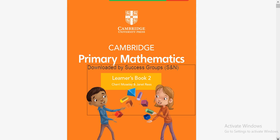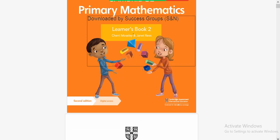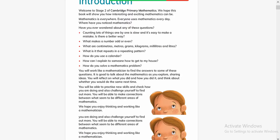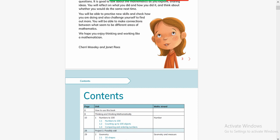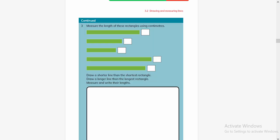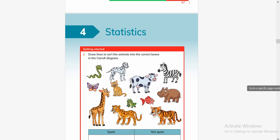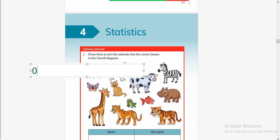Bismillahirrahmanirrahim and assalamu alaikum. This is Cambridge Primary Mathematics Learner's Book 2, and I am Asian. I'm going to make this video on someone's request. He has dropped me a message on my WhatsApp to help solve unit number four, page number one - Statistics. You also can ask me for this kind of help.